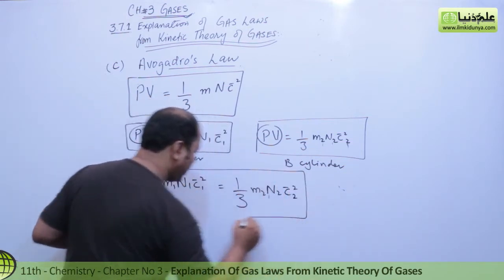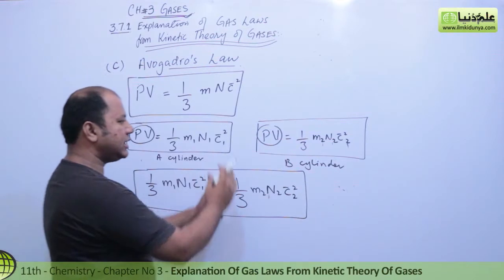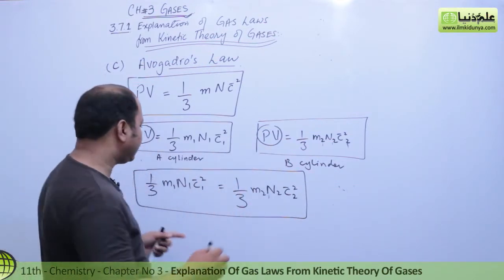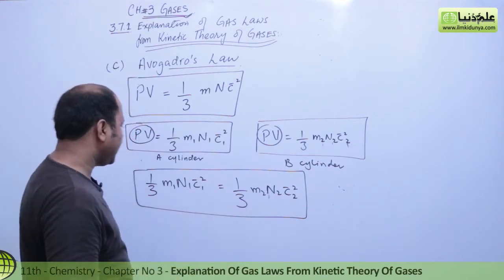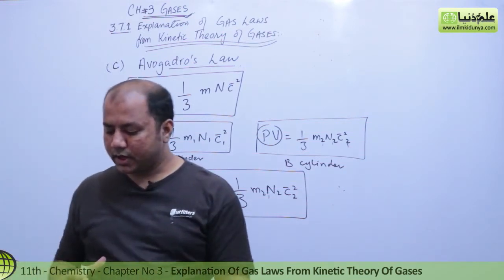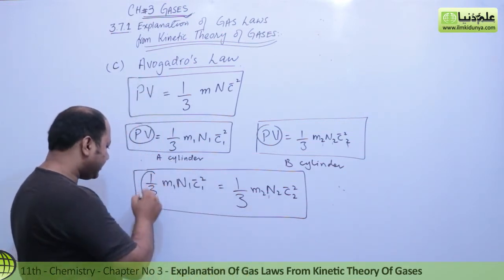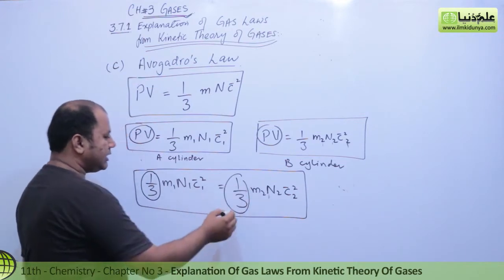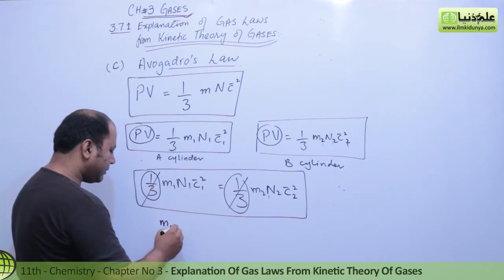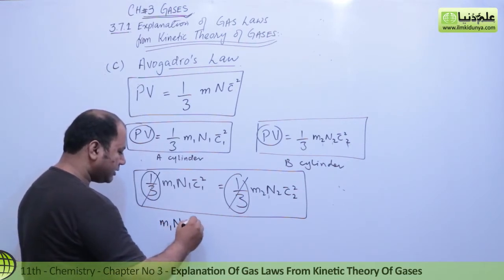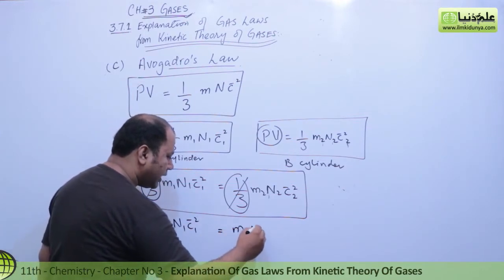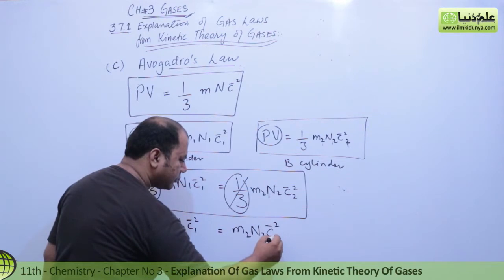Now comparing the two cylinder equations A and B: since PV has the same factor, and the (1/3) factor is also the same on both sides, we can cancel it. This gives us M₁ N₁ C̄₁² = M₂ N₂ C̄₂².